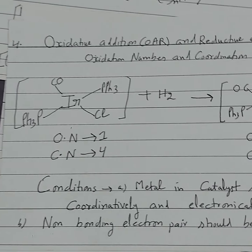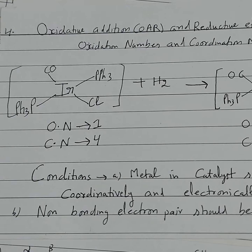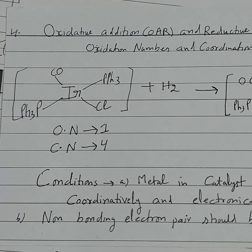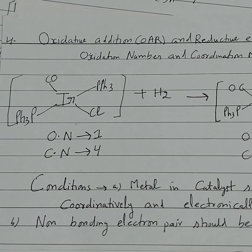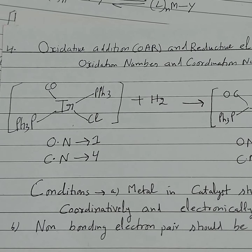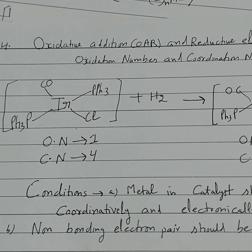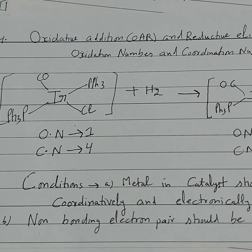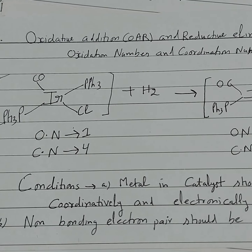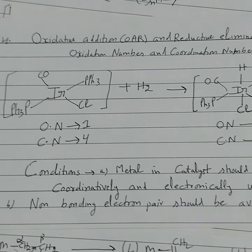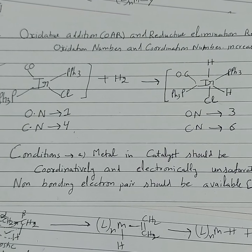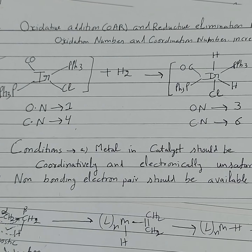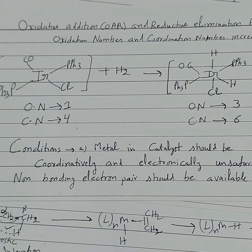The fourth common step in catalytic chemistry is the oxidative addition reaction. As the name indicates — oxidative means an increase in oxidation number, and addition means an increase in coordination number. So in the oxidative addition step, the metal's coordination number increases by 2 as well as its oxidation state increases by 2. Both the oxidation number and coordination number of the metal increase by 2.